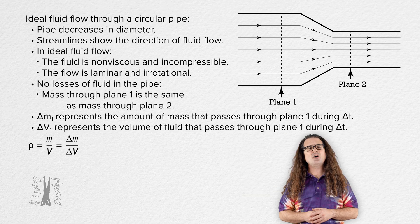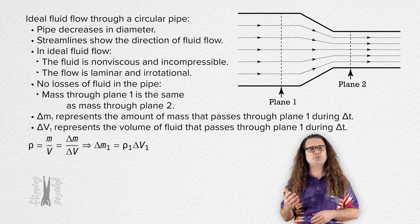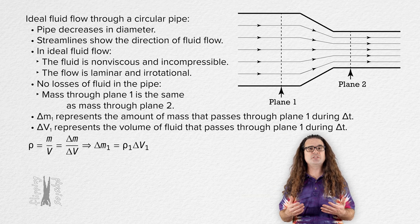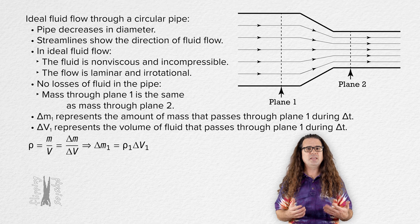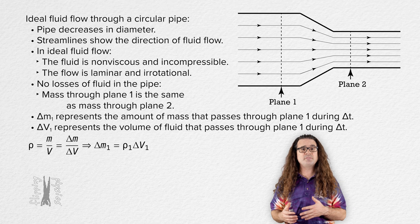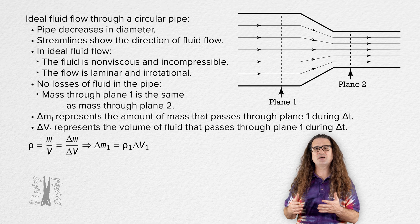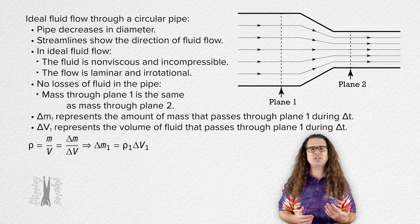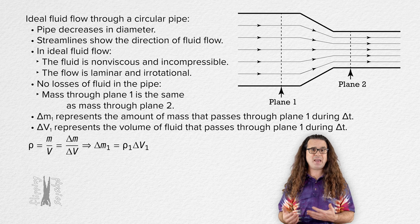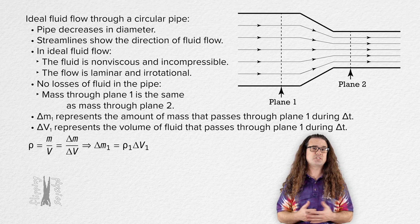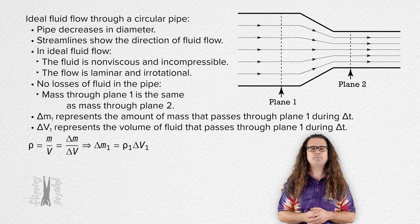Let's solve for the mass which passes through plane 1 during change in time delta t. It equals the density of the fluid at plane 1 times delta V sub 1, the volume of the fluid which passes through plane 1 during change in time delta t.